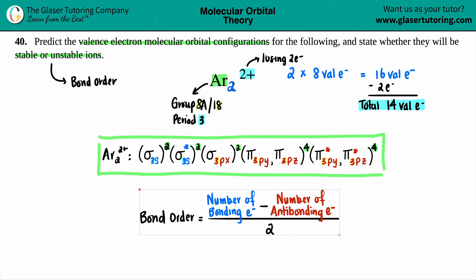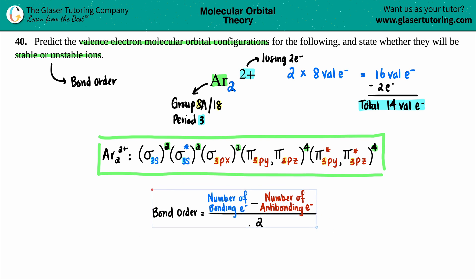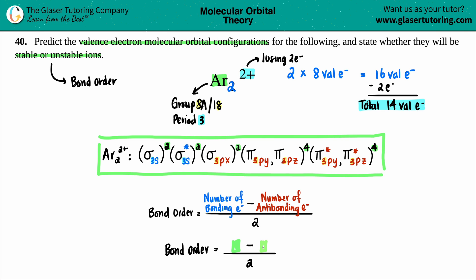What is the bond order formula? It's pretty simple. We're going to take our number of bonding electrons minus the antibonding and divide by two. Let's set it up now: bond order equals something minus something else divided by two.